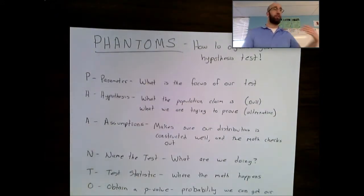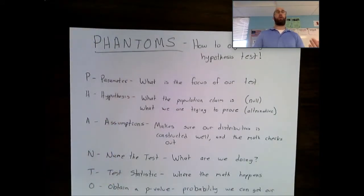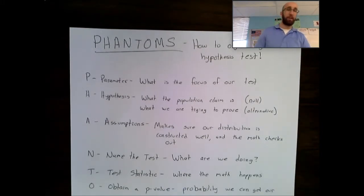So if someone claims an average is 50, that would be our population claim. What our alternative is, is what we're trying to prove. I believe it's less than 50. I believe the average is bigger than 50, or I just don't believe it is equal to 50.